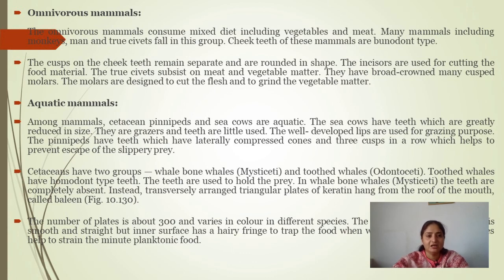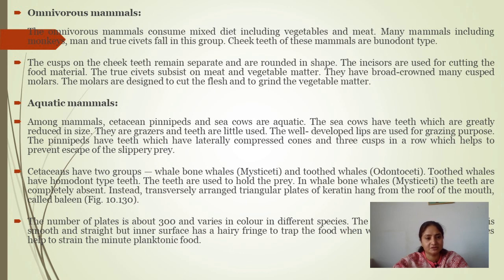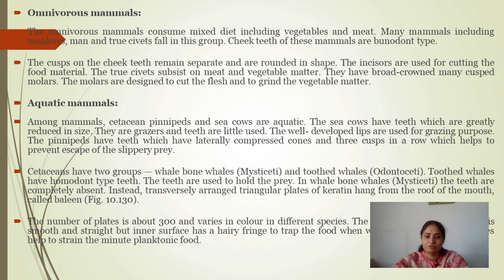Among aquatic mammals, cetaceans and sea cows are aquatic. Sea cows have teeth greatly reduced in size. Cetaceans are divided into two groups: Mysticeti and Odontoceti. Toothed whales have bunodont homodont type dentition. Mysticeti — baleen whales — have teeth completely absent, replaced by transversally arranged triangular baleen plates which are used for filtering, as they are planktonic feeders.